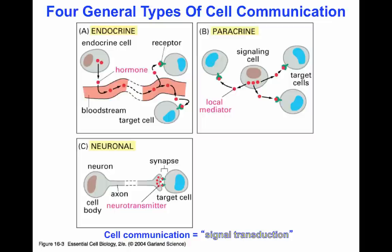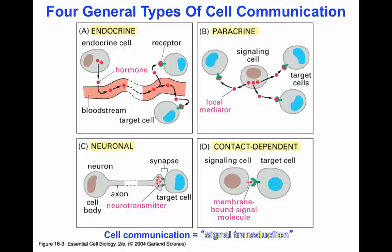The last communication type is contact-dependent signaling. A signaling cell has a membrane-bound ligand on its surface that can interact with a receptor on a neighboring cell, giving that cell a signal to, for example, differentiate. One last example not shown in this slide is autocrine signaling, where a cell also has the receptor for the local mediator it is releasing — the cell turns itself on. An example is interleukin-2: T cells secrete interleukin-2 and also have the interleukin-2 receptor on their surface, turning themselves on to divide and become effector cells.